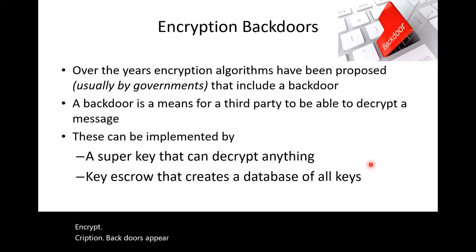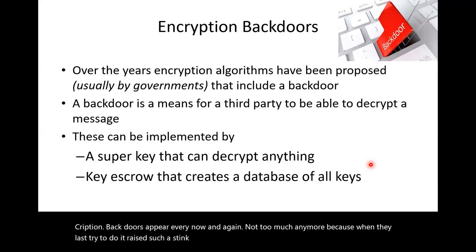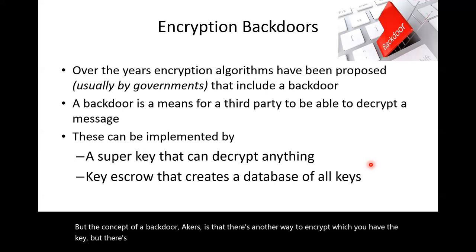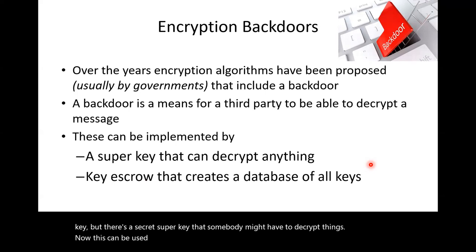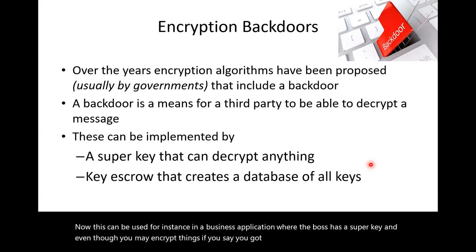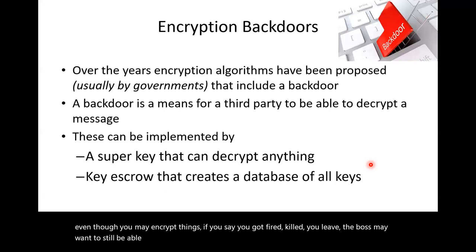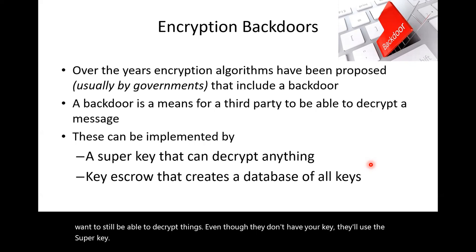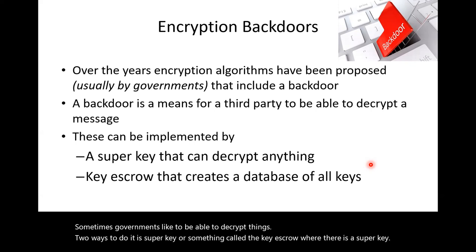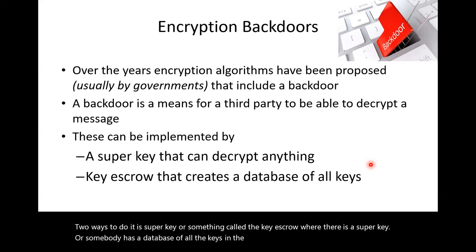Encryption backdoors come up every now and again. The concept is that there's another way to decrypt it — you have the key, but there's a secret super key that somebody else might have. This can be used in a business application where the boss has a super key: even if you encrypt things and then get fired, quit, or die, the boss can still decrypt using the super key. Governments sometimes want this capability too. Two approaches: a super key, or a key escrow where somebody has a database of all keys and looks them up when they have the authority.